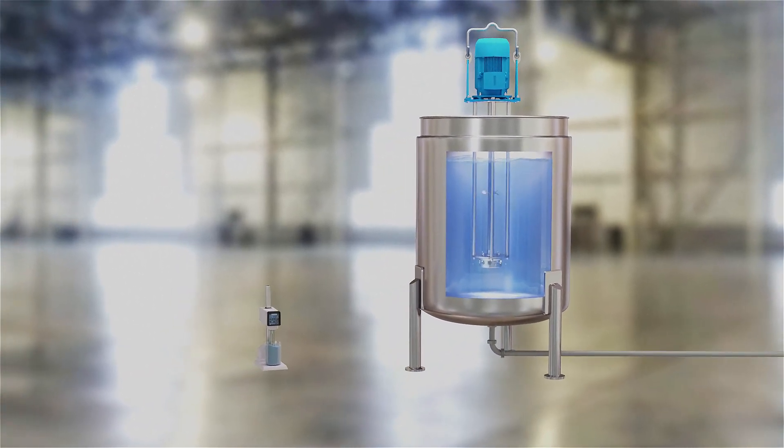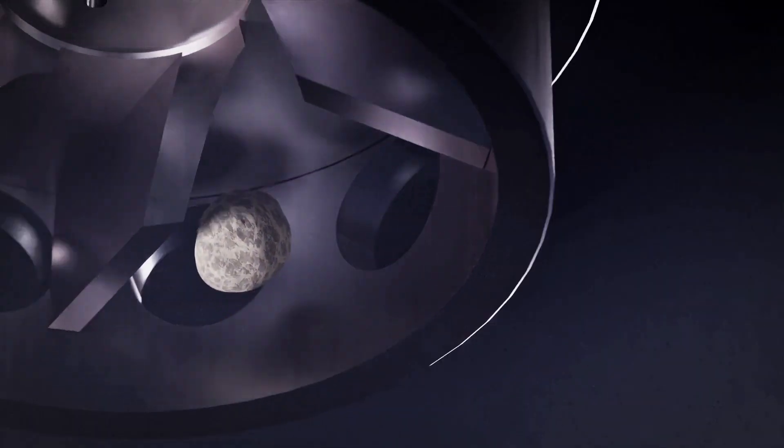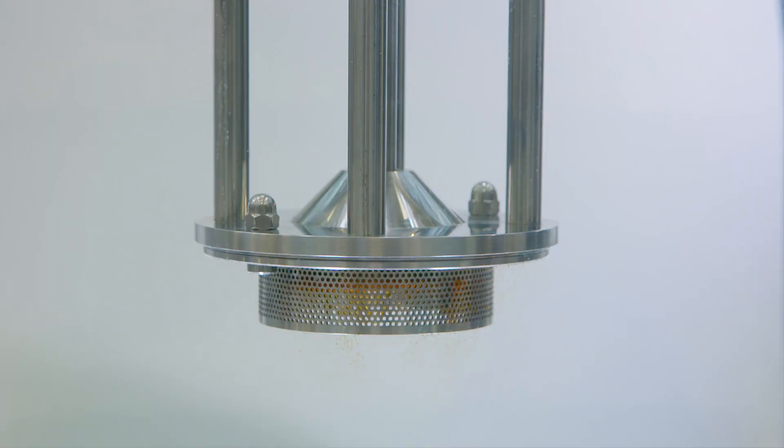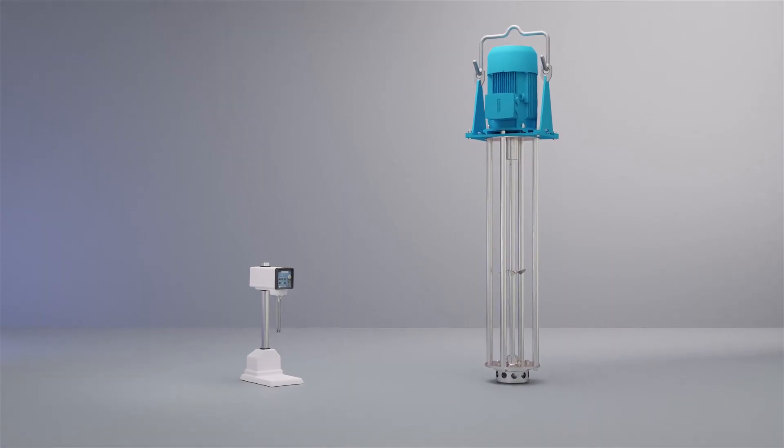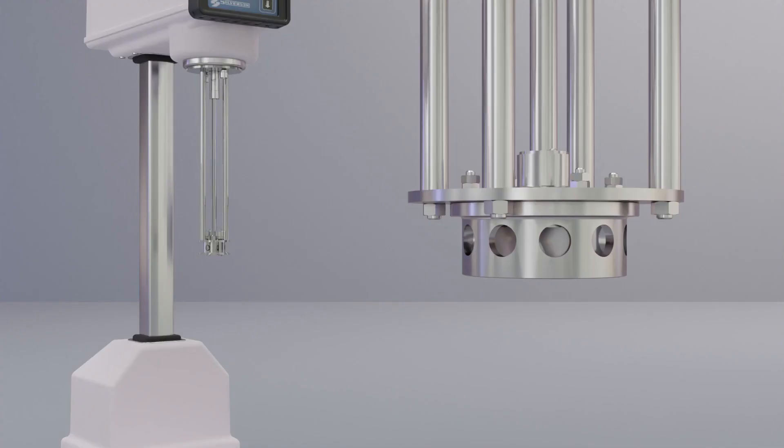But because the mixer's ability to disintegrate solids or reduce globule size to form an emulsion is determined by the shear rate, to obtain comparable results when scaling up you need to consider the tip speed, not the RPM.